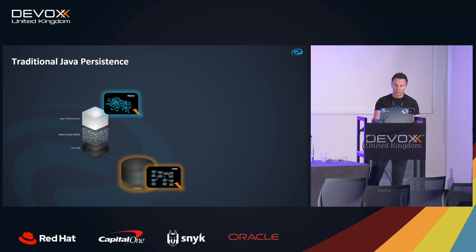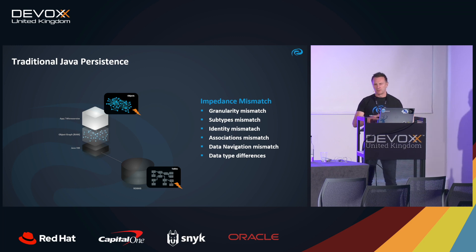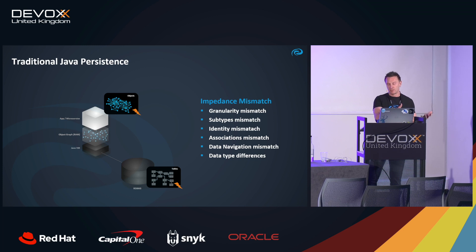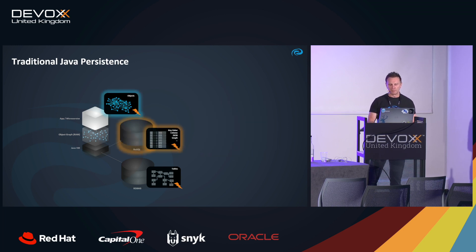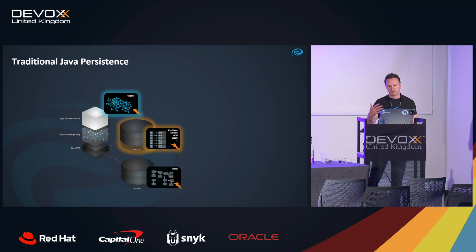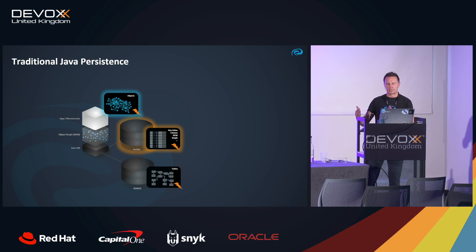Relational databases use tables and relations. The problem is that it's not possible to store Java objects directly into a relational database, so we have various impedance mismatches. To solve this we need a mapping — we have to adapt our object model to a database model. The same applies when using a NoSQL database, which comes with its own data structure like key-value, column stores, JSON, or graphs. We need a mapping or data conversion behind the scenes.